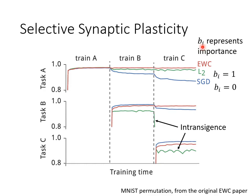If we give different bi to different parameters — some parameters with large bi, some with small bi — fixing only certain parameters while keeping others flexible, we get the red line. The red line performs best on every task. Task A accuracy doesn't drop after three sequential tasks; Task B accuracy drops only a little compared to the blue line; Task C accuracy is slightly lower than the blue line but far better than when all bi are set to 1.